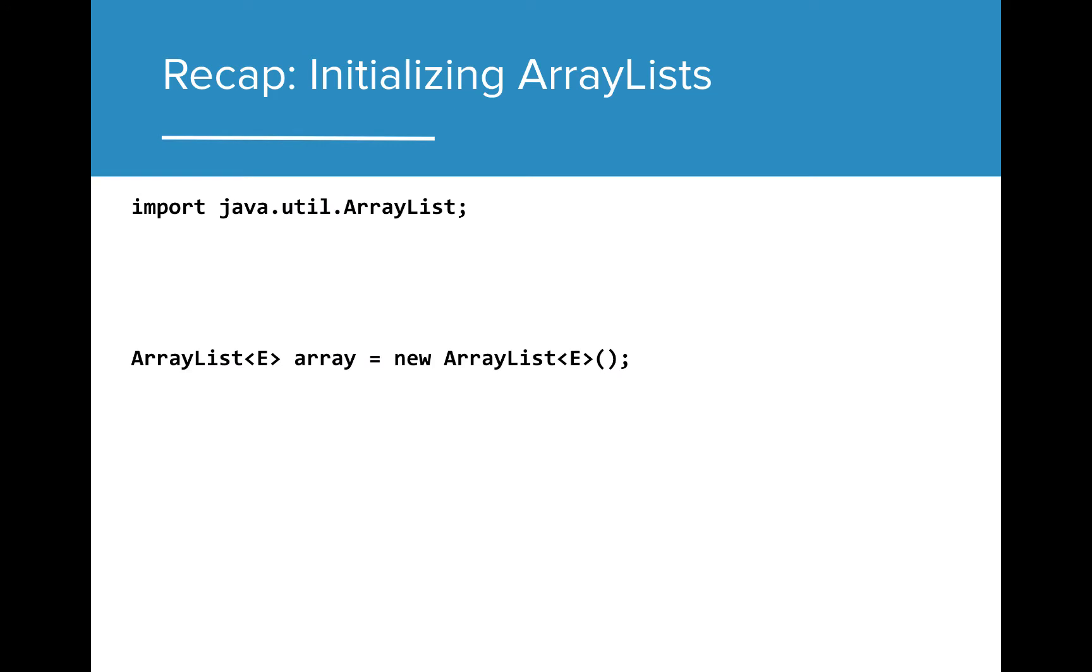In the last lesson, we learned that ArrayLists are mutable objects that store object references. We can use ArrayLists by importing the java.util class ArrayList and initializing an ArrayList by specifying what data type will be stored in the ArrayList.